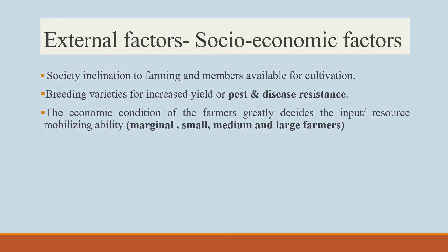Coming to socio-economic factors — the society's inclination to farming and the manpower available for cultivation also influences crop production. If there is no availability of workers, there will be many weeds, which negatively affects production. Breeding varieties with resistance to pests and diseases can help. The socio-economic condition of farmers greatly influences the purchasing of inputs — whether marginal, small, medium or large farmers — and this also affects crop production.